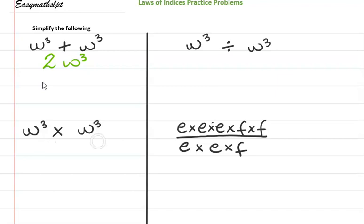In this one we are using the laws of indices: w cubed multiplied by w cubed. When we're multiplying same bases we add our powers, so this would be w to the third power plus three, and our answer simplifies to w to the sixth power.